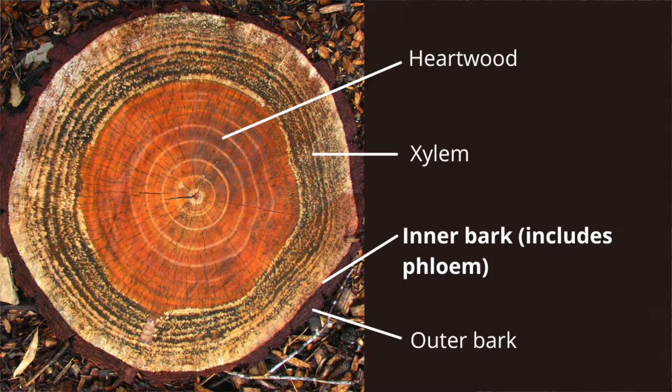The tree has two different types of vascular tissue — vascular meaning, in the same way that our bloodstream works, this moves nutrients, minerals, and sugars throughout the tree. Those two types are phloem and xylem. Phloem is part of the inner bark and is the primary mover of photosynthetic products — basically sugar, the sugar that the plant produces through photosynthesis. Phloem takes that sugar and moves it throughout the tree to wherever it's needed.